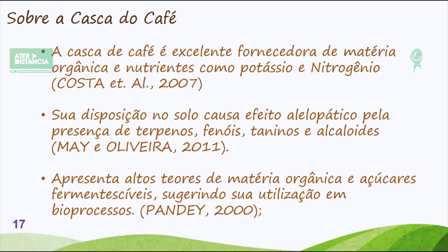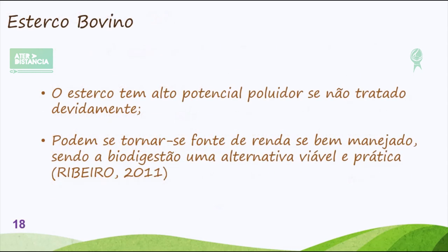A casca apresenta altos teores de açúcares fermentáveis, sugerindo sua utilização em bioprocessos. Autores desde o ano 2000 já sugeriam a utilização da casca de café nesse processo. Por outro lado, o esterco bovino também tem alto potencial poluidor se não for tratado devidamente, mas pode se tornar fonte de renda se bem manejado, sendo a biodigestão uma alternativa viável e prática. O esterco bovino já é largamente utilizado em produções convencionais, orgânicas e agroecológicas, tanto no processo de compostagem e curagem do material, quanto nos processos de biodigestão. Vamos estar utilizando esses dois materiais, acrescentando a palha de café para melhoria nesse processo.